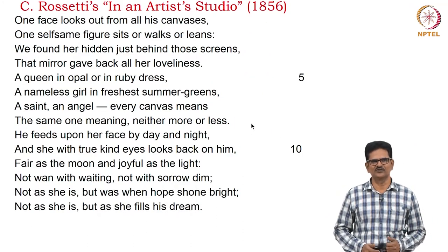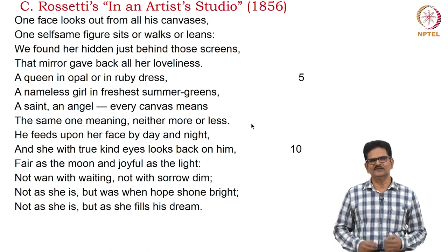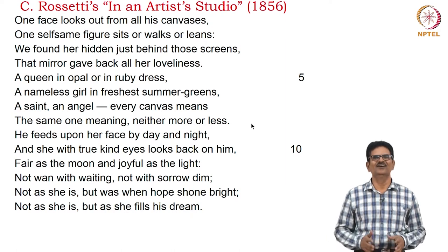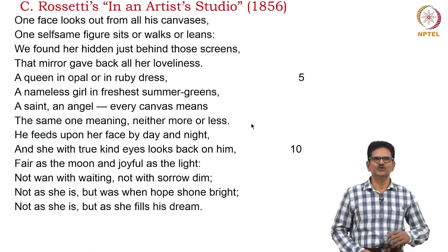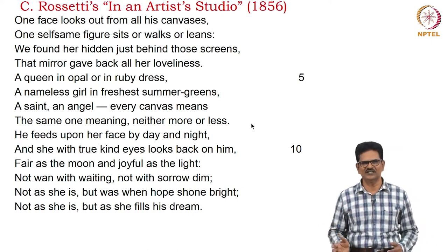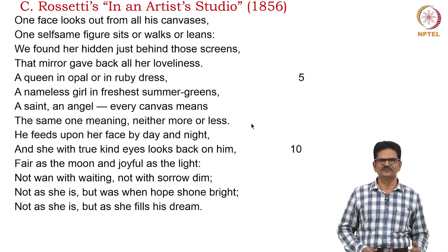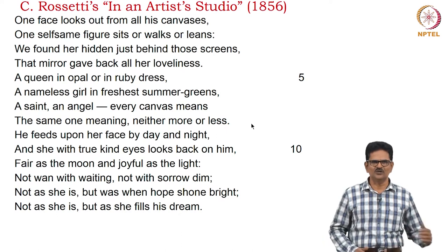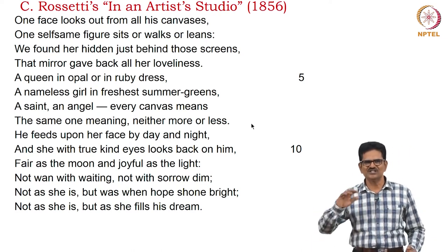We have an example from Christina Rossetti's poem In an Artist's Studio, published in 1856. Rossetti herself was a model for her own brother for painting. The sonnet reads: 'One face looks out from all his canvases, one selfsame figure sits or walks or leans. We found her hidden just behind those screens. That mirror gave back all her loveliness, a queen in opal or in ruby dress, a nameless girl in freshest summer greens, a saint, an angel, every canvas means the same one meaning, neither more nor less. He feeds upon her face by day and night, and she with true kind eyes looks back on him, fair as the moon and joyful as the light, not wan with waiting, not with sorrow dim, not as she is, but was when hope shone bright, not as she is, but as she fills his dream.'